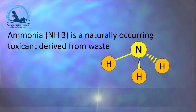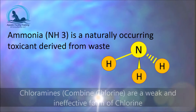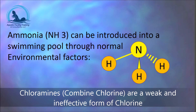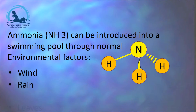Ammonia is a naturally occurring toxicant derived from waste. It is comprised of both nitrogen and hydrogen. Ammonia can be introduced into a swimming pool from a variety of environmental factors. It can come in from the wind, the rain, leaves,